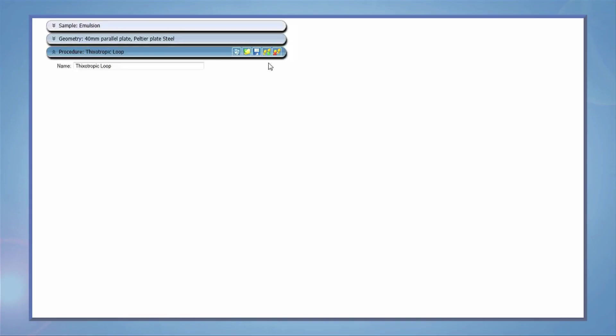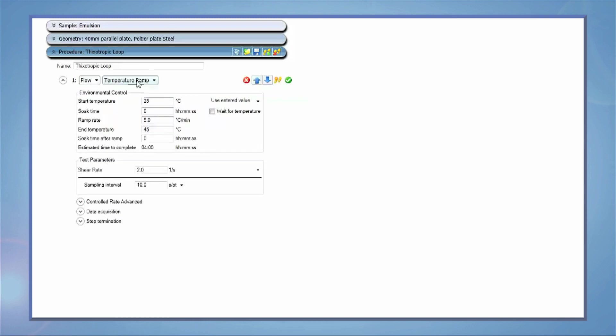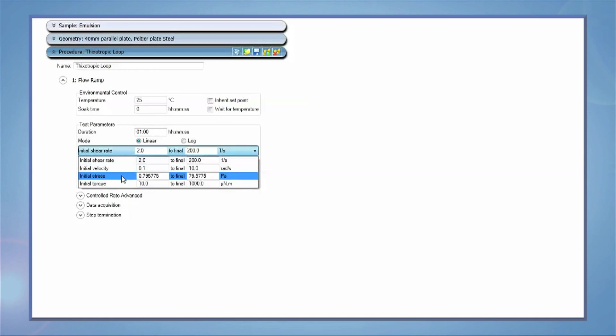To test thixotropy, we can perform a set of flow ramps. First, we will ramp shear stress from 0 to 100 pascals in a linear mode over a duration of one minute.